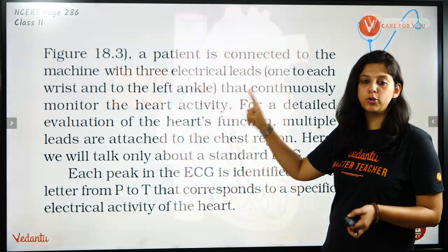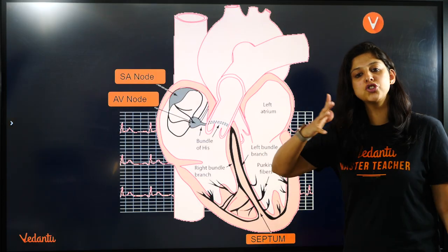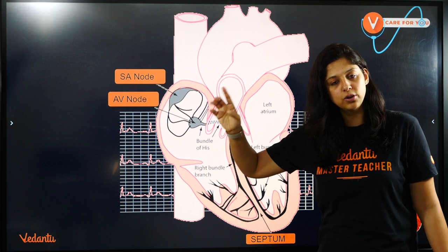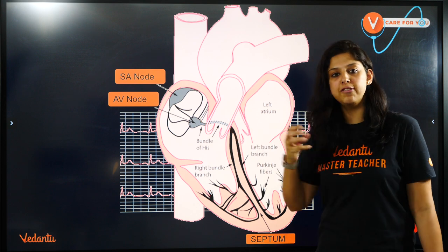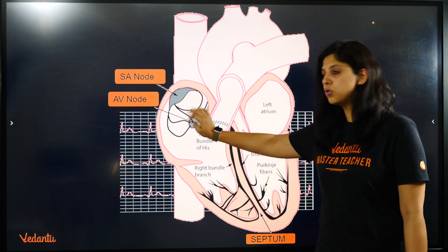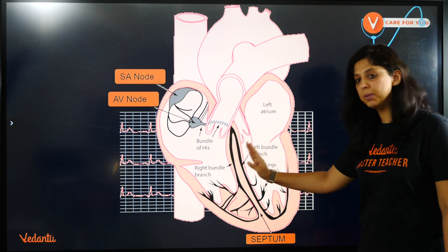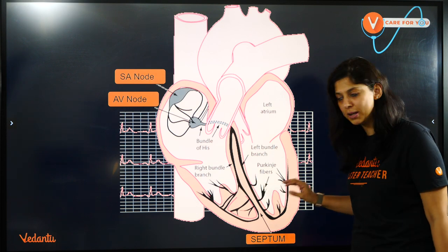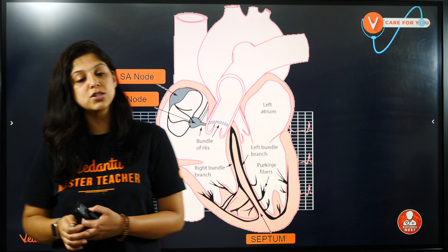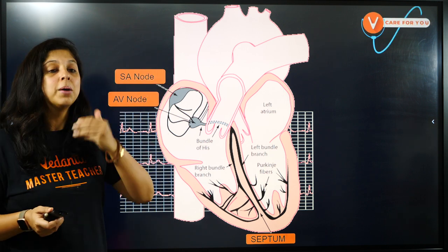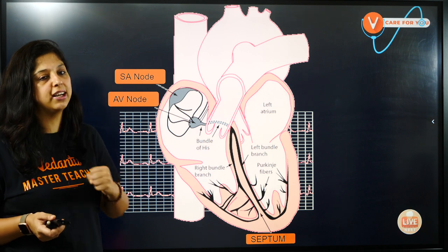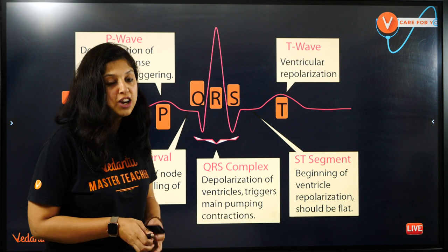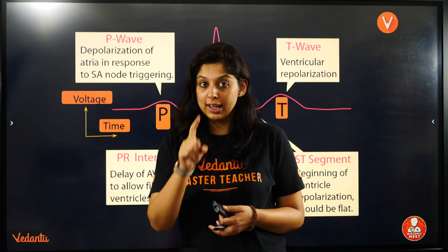There are three electrical leads — one for each wrist and one to the ankle. Before I talk about the leads, it's very important to tell you about the autorhythmicity and the conduction system of the heart. This is the SA node, whose full form is sinoatrial node — it is the pacemaker. From here, the signal goes to the AV node — atrioventricular node. From the AV node, the signal divides into the ventricular septum: right bundle branch towards the right side, left bundle branch towards the left side, and finally goes into the Purkinje fibers. The Purkinje fibers spread out so that the entire ventricle contracts as one unit.